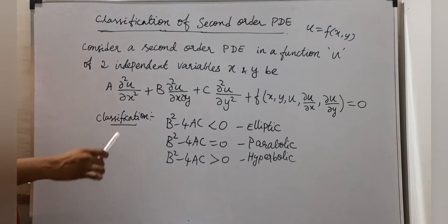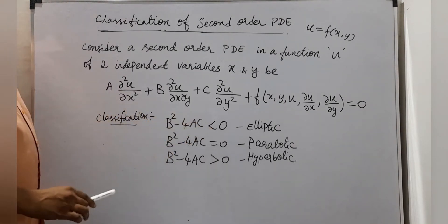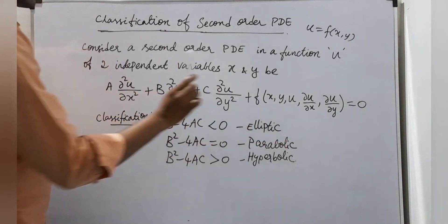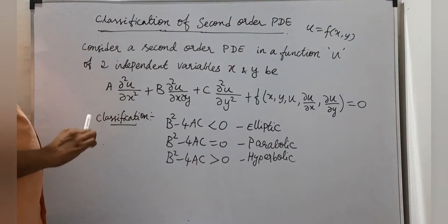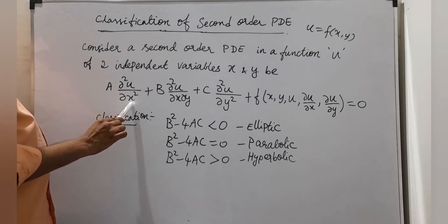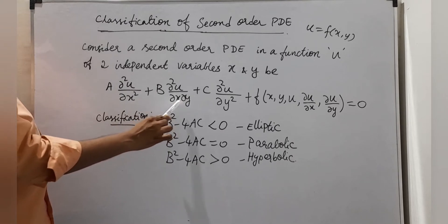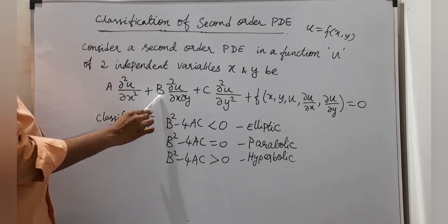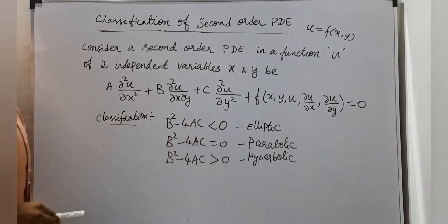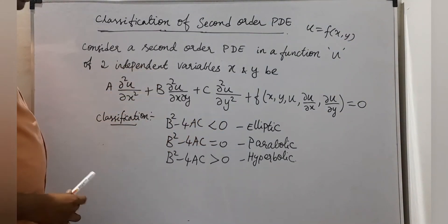We need the coefficients of the second derivatives only — no need to worry about the remaining terms. Note that the coefficient of dou²u/dou x² is A, the coefficient of the mixed partial derivative dou²u/dou x dou y is B, and the coefficient of dou²u/dou y² is C. Now we are going to see a few problems.